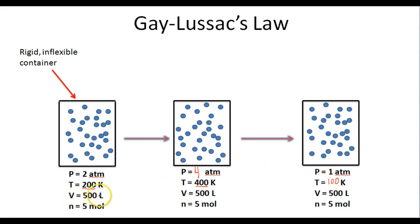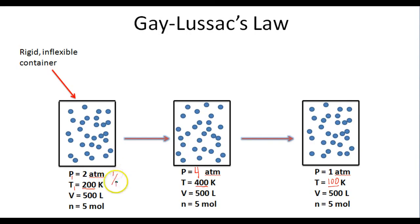Gay-Lussac states that if the volume and number of moles of a gas are held constant, then the pressure and temperature of that gas will be directly proportional. If the temperature doubles from 200 to 400 K, the pressure is going to double from two to four atmospheres. If the pressure is being cut by a factor of one-fourth, it's because the temperature is also decreasing by a factor of one-fourth. The starting pressure divided by the starting temperature equals one over 100 K, and the final pressure divided by the final temperature is also one over 100.